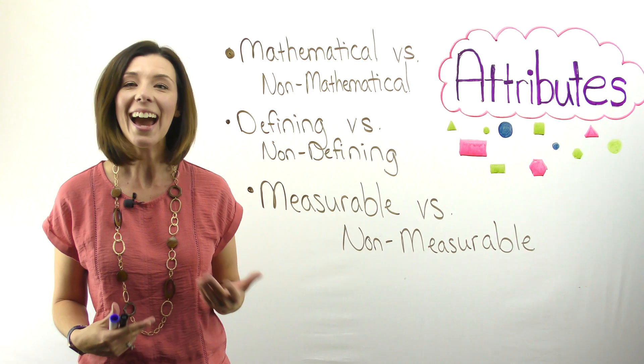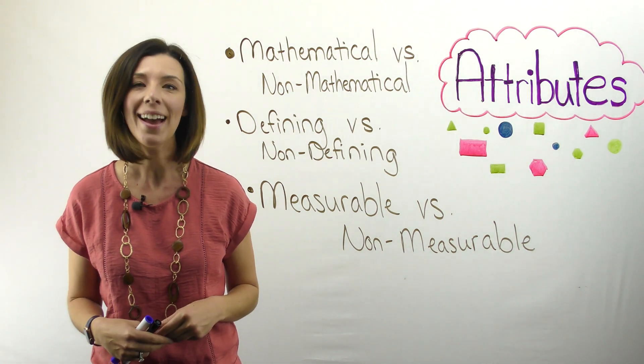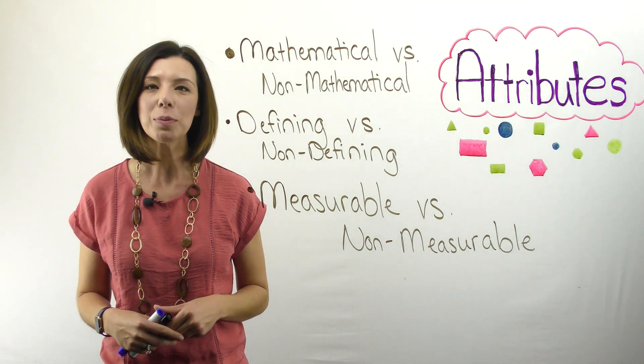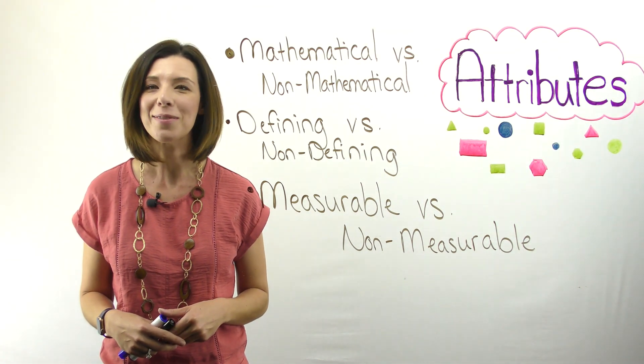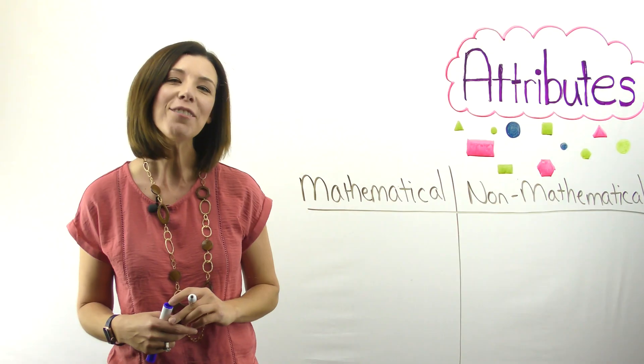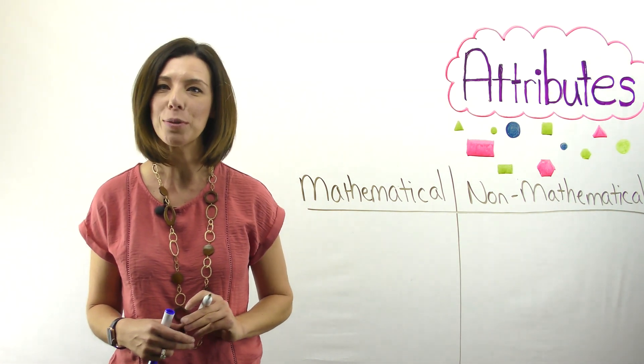Let's take a look at an attribute of the thin red hexagon. What would be some mathematical attributes for this thin red hexagon? If you said that it has six sides, you would be correct. That's a mathematical attribute.